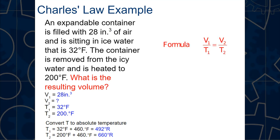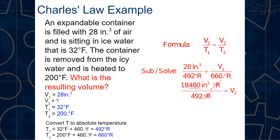Using V₁/T₁ = V₂/T₂: 28/492 = V₂/660. Cross-multiply: 28 × 660 = 18,480. Divide by 492 to get V₂ = 38 cubic inches. The volume increased from 28 to 38 cubic inches because the temperature went from 32°F to 200°F.